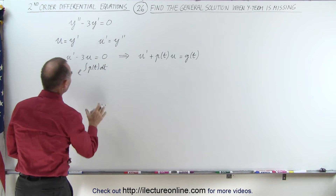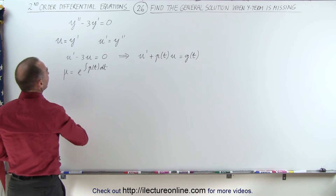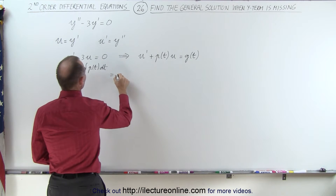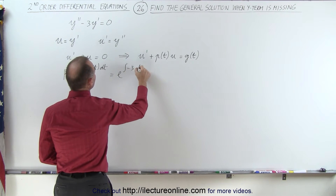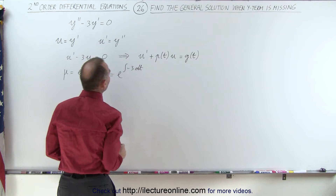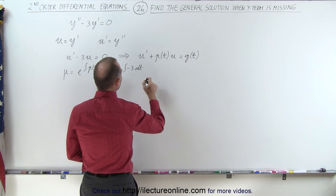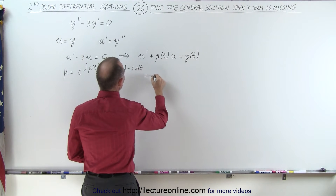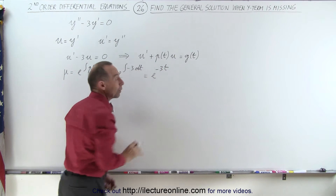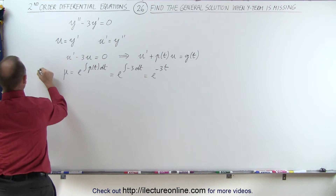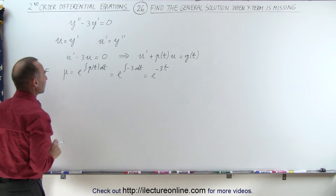In this particular case, p of t is negative three, so the integrating factor is e to the integral of negative three dt, which equals e to the negative three t. That is the integrating factor.